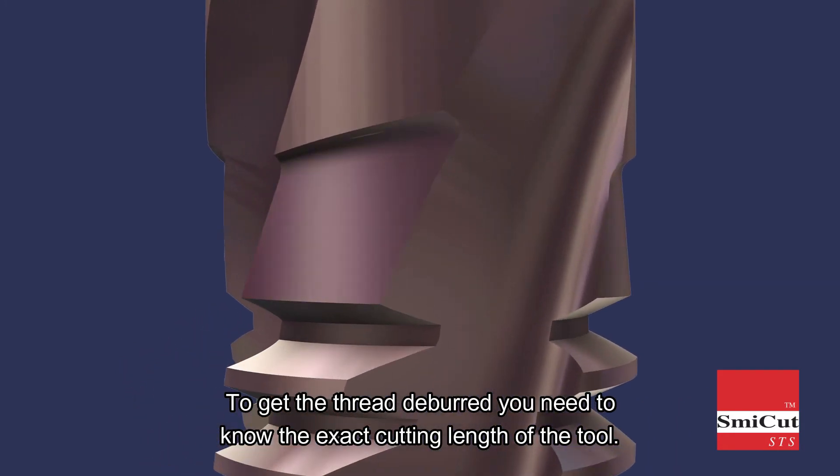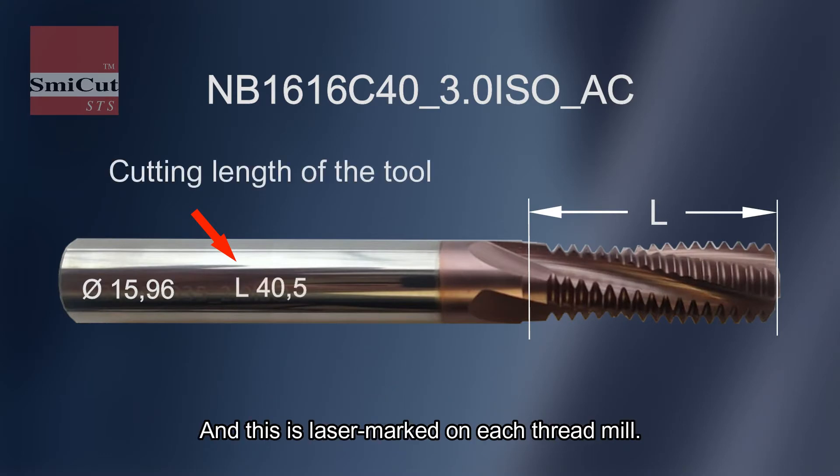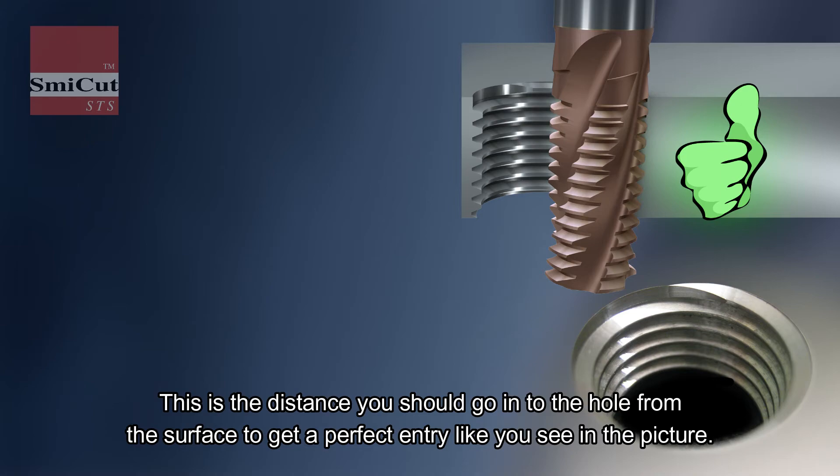To get the thread deburred, you need to know the exact cutting length of the tool. And this is laser marked on each thread mill. This is the distance you should go into the hole from the surface to get the perfect entry like you see in the picture.